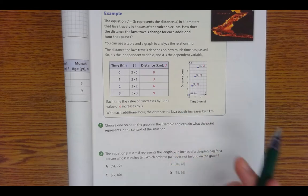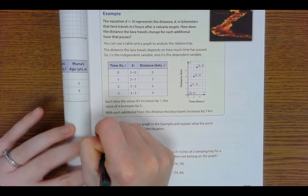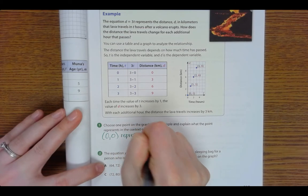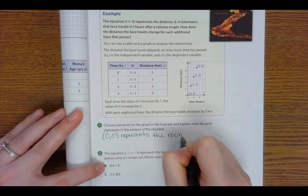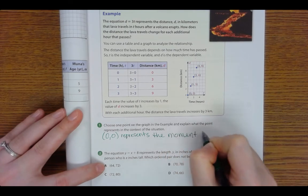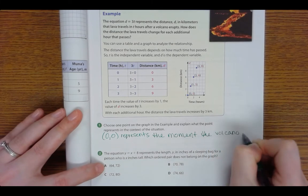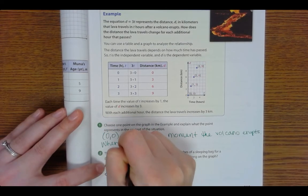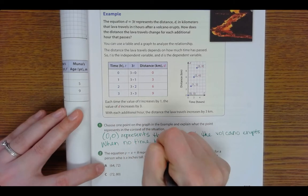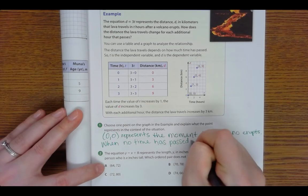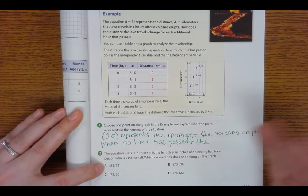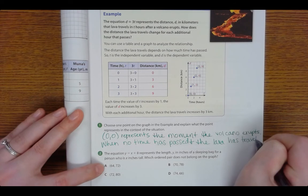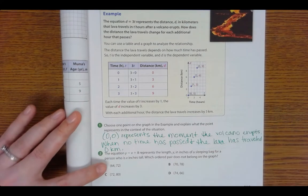So let's look here. I'm going to choose (0, 0). So (0, 0) represents the moment the volcano erupts. So that's when no time has passed and the lava has traveled 0 kilometers.